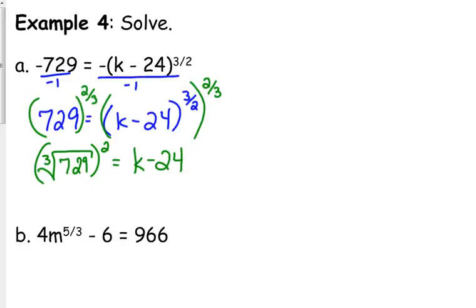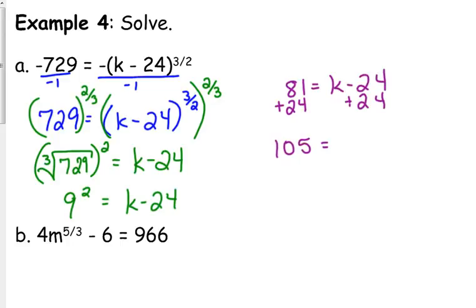So the cube root of 729, we just used it, it was 9. 9 squared is 81, and that's equal to k minus 24. So we have one more step. We need to add 24 to both sides. So that gives us 105 is equal to k.